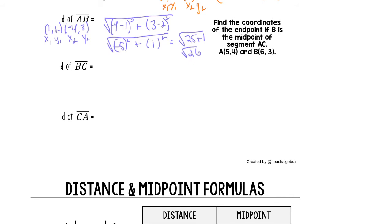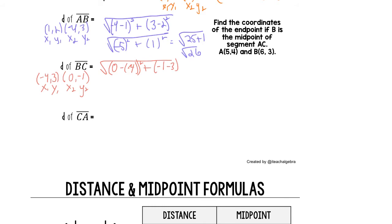Let's do the same thing for BC. This would be a great place to pause and try these on your own. We label X1, Y1, X2, Y2 and plug into our formula. The difference in X's: zero minus negative four, squared. Plus the difference in Y's: negative one minus three, squared. That gives us positive four squared plus negative four squared — the square root of 16 plus 16, or the square root of 32.